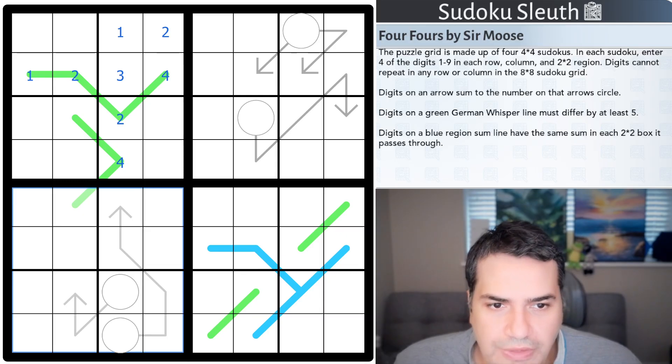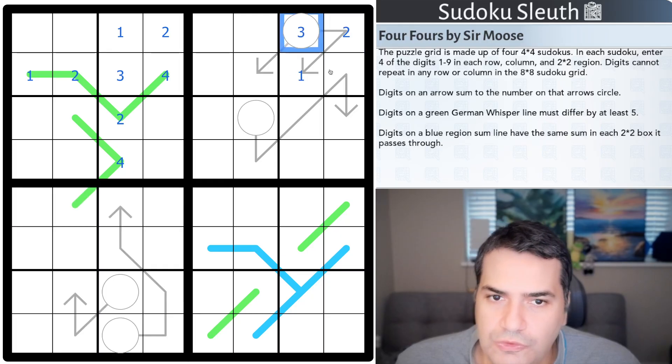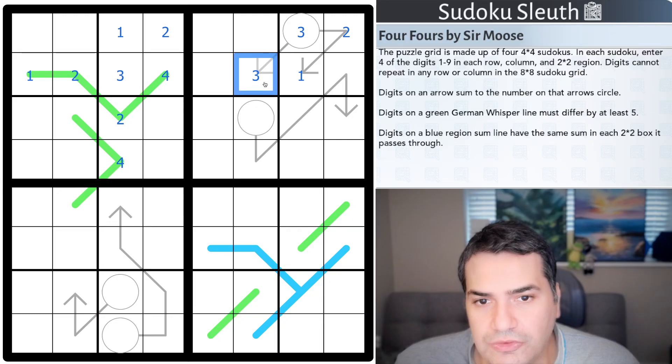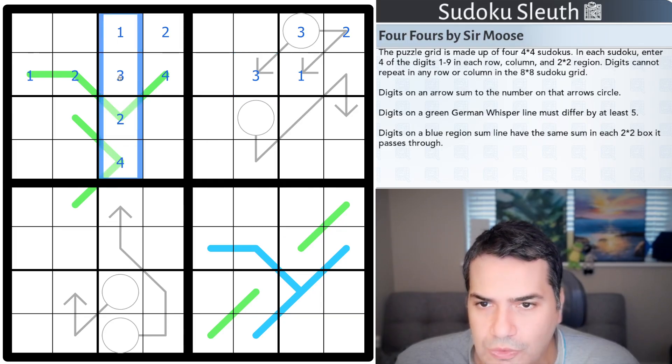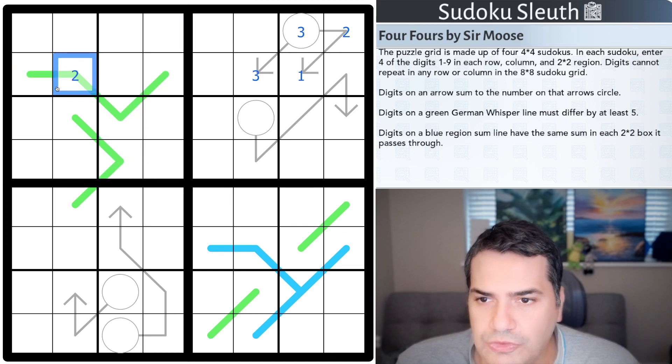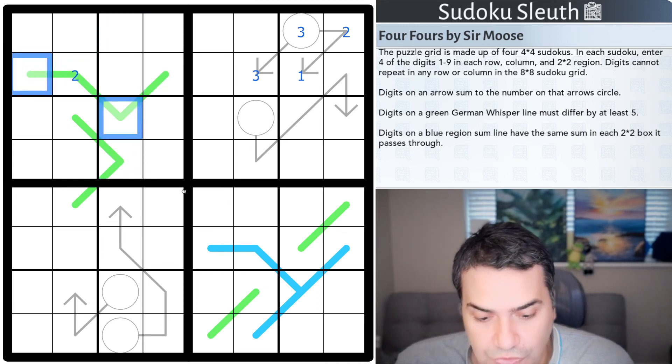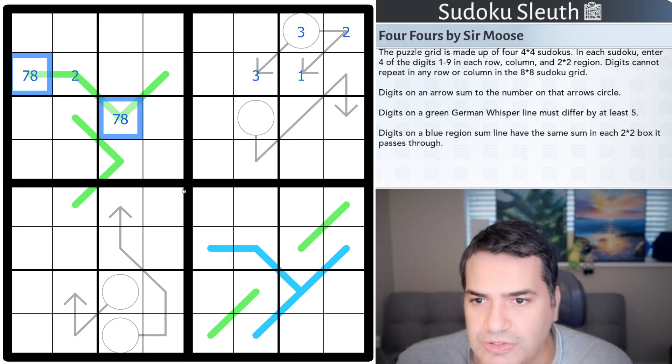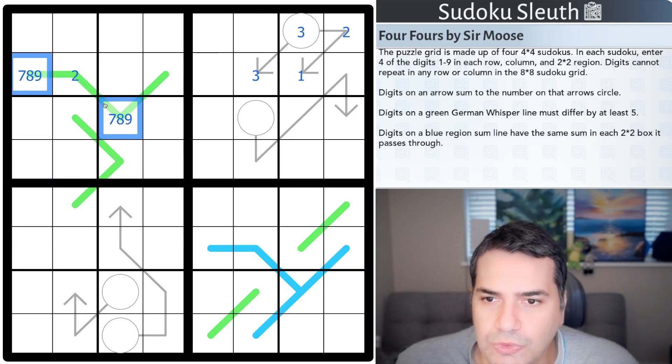Then, we have a number of normal variants. Digits on an arrow sum to the number on the arrow circle. So, if this cell is a 1 and a 2, this would have to be a 3 so that these two cells add up to whatever's inside the circle. If it's a one-cell arrow, it's duplicating itself. A little bit obvious. Digits on a green German whisper line must differ by at least 5.